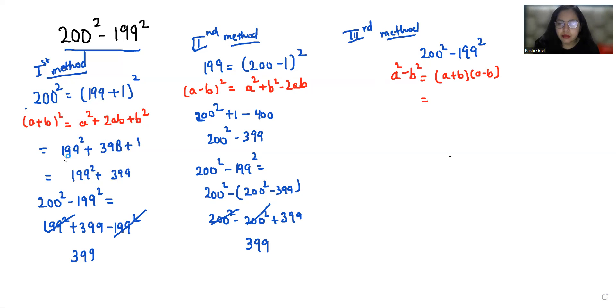So it becomes a is 200 and b is 199. 200 plus 199 times 200 minus 199. So 200 plus 199 is 399 times 1 that is 399.